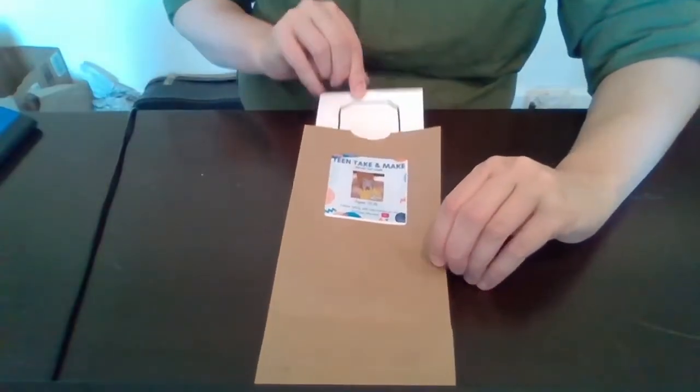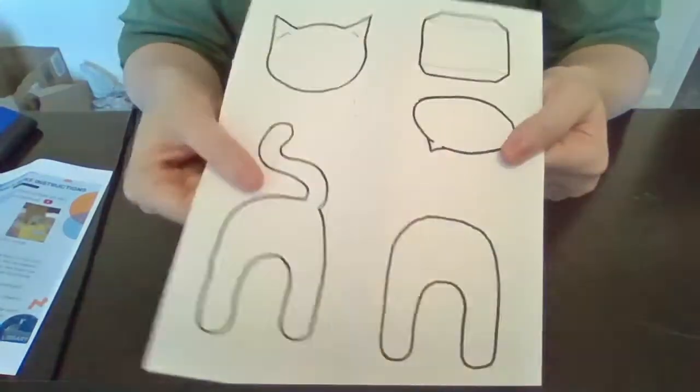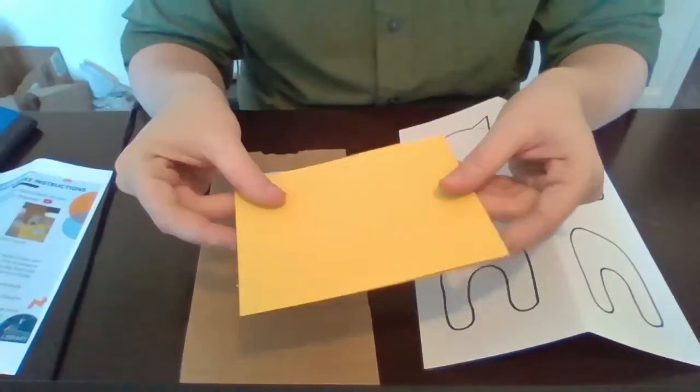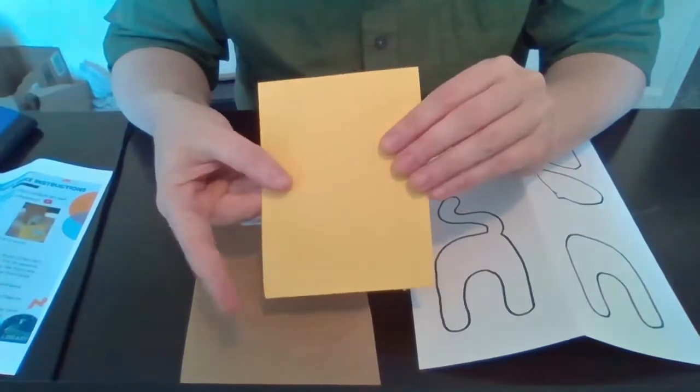So in your bag you have instructions, you have a template for your cat, and you have a piece of construction paper for your card.